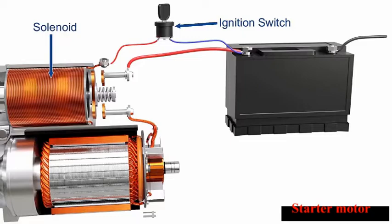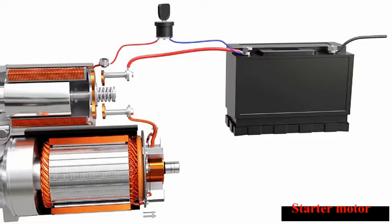The solenoid is an electromagnet which requires small current to get energized. As the ignition switch is turned on, the solenoid gets energized. A moving core known as a plunger slides along the coil.